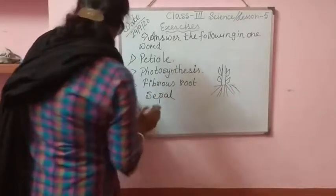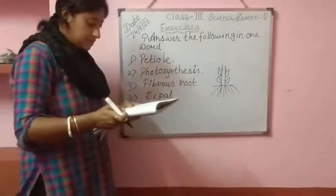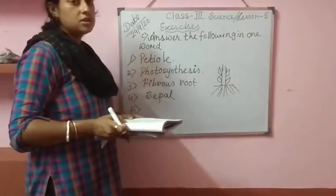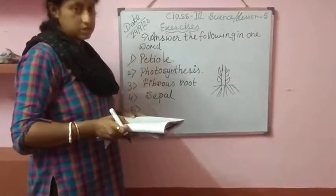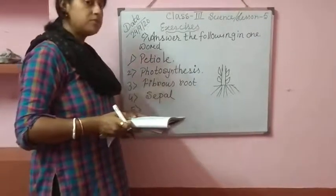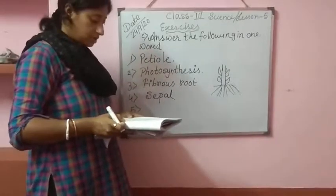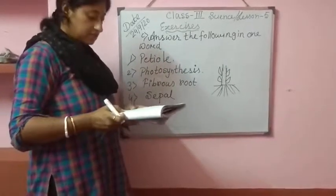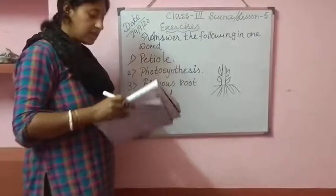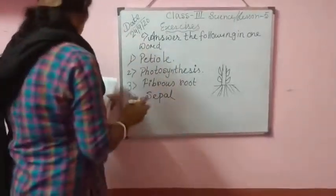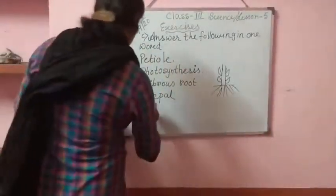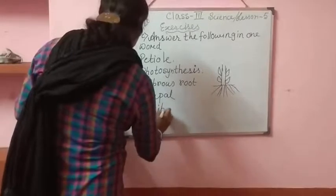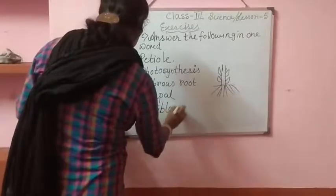At last, number 5: seeds eaten by us. Those seeds that we eat — answer will be edible seeds.